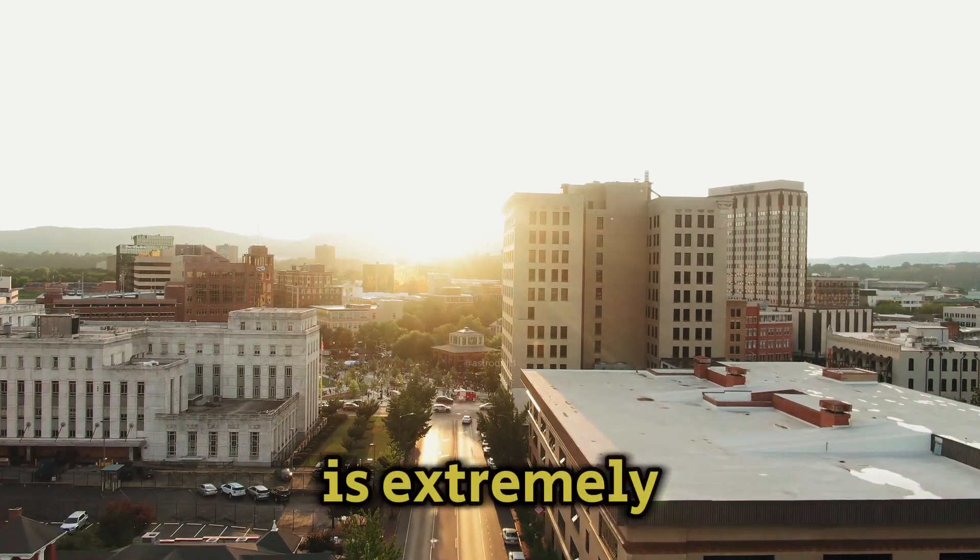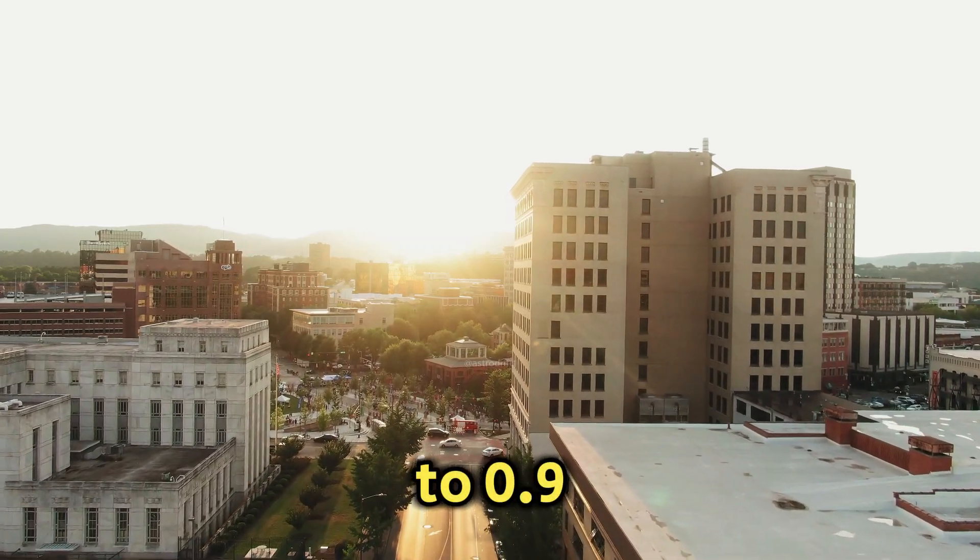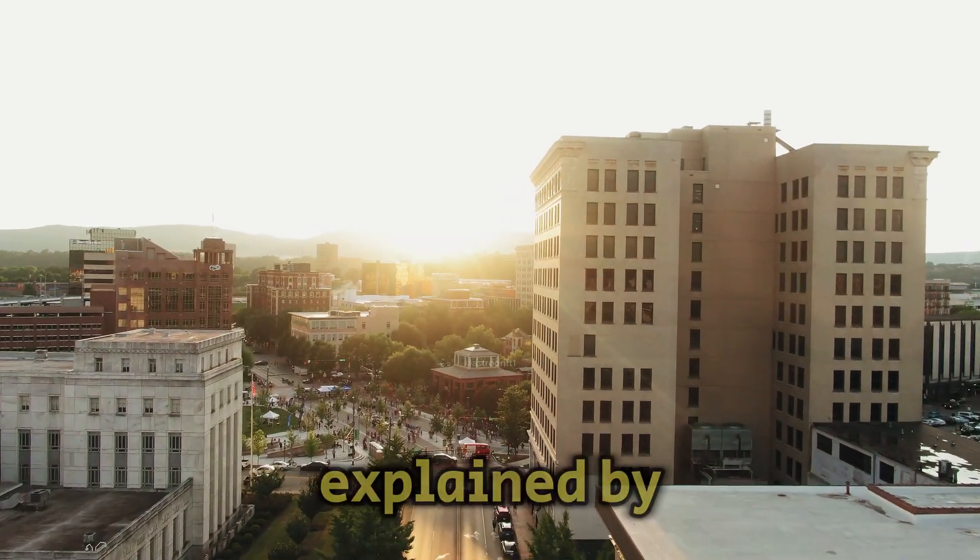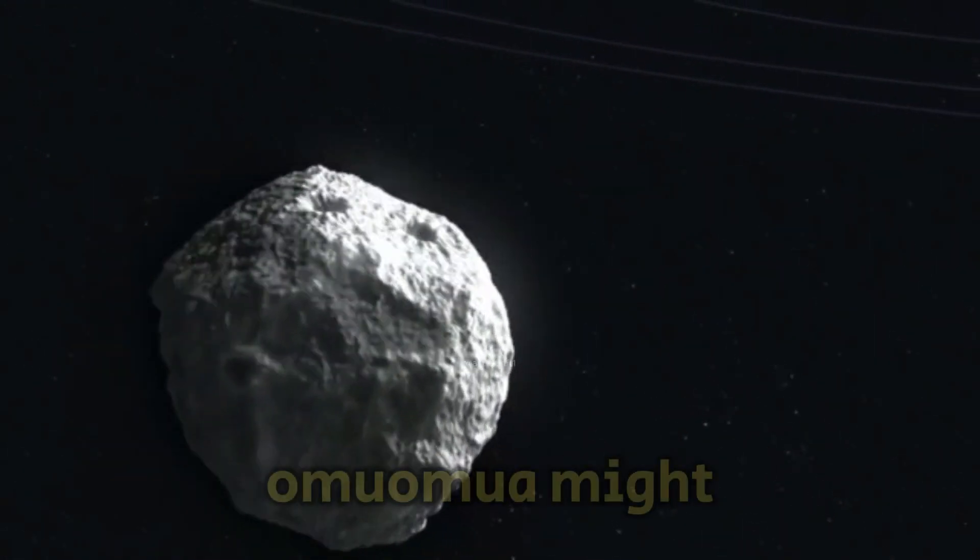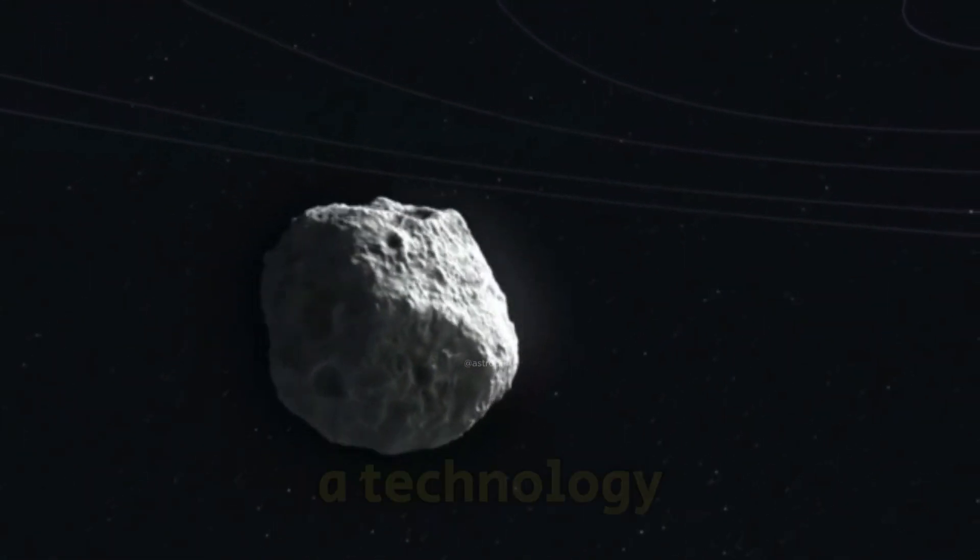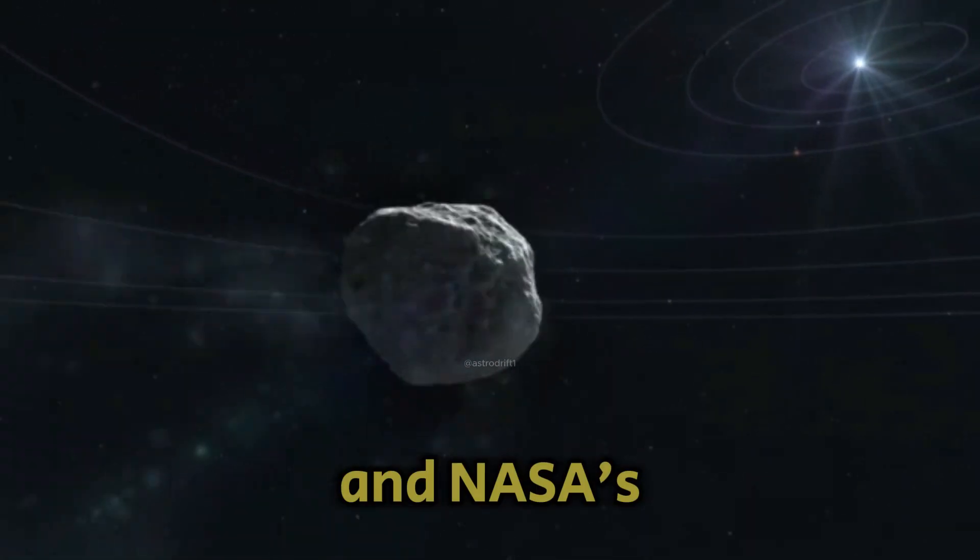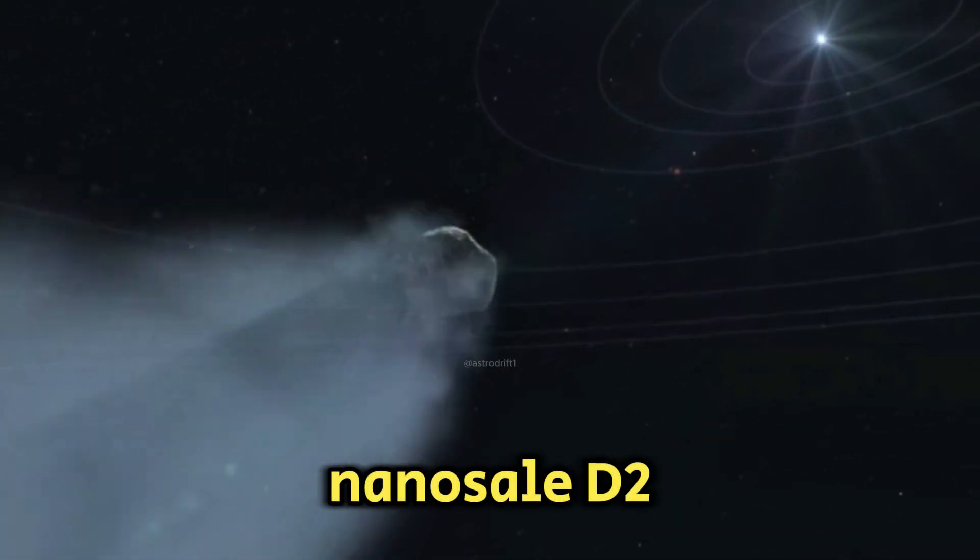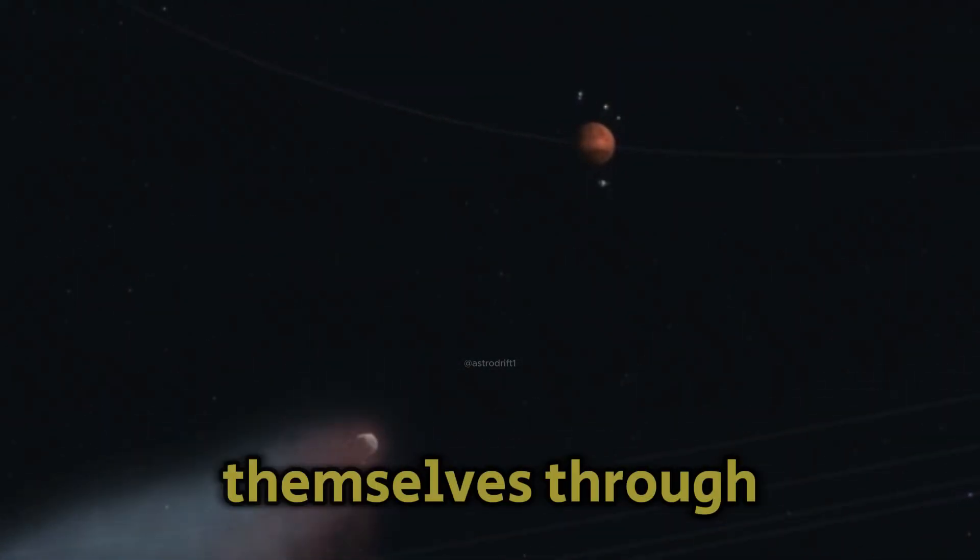If Oumuamua is extremely thin, with a thickness ranging from 0.3 to 0.9 millimeters, its movement could be explained by solar radiation pressure. Some scientists propose that Oumuamua might be a light sail, a technology demonstrated in space missions like Japan's IKAROS probe and NASA's nanosail D2. These light sails use the kinetic energy of photons to propel themselves through space.